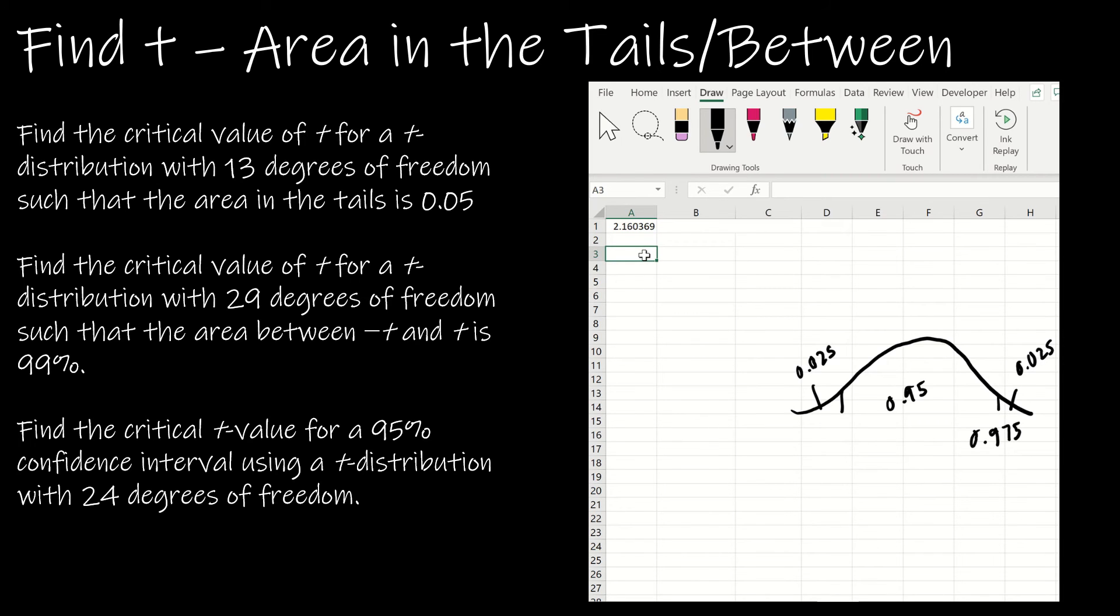The other way that you can do it is you can actually say T.INV.2T, which tells me it's two-tailed. So notice there's the same amount in each tail, and then I can use the 0.05 which is the five percent that they gave me with 13 degrees of freedom, and notice I get the exact same solution. Either one is perfectly acceptable.